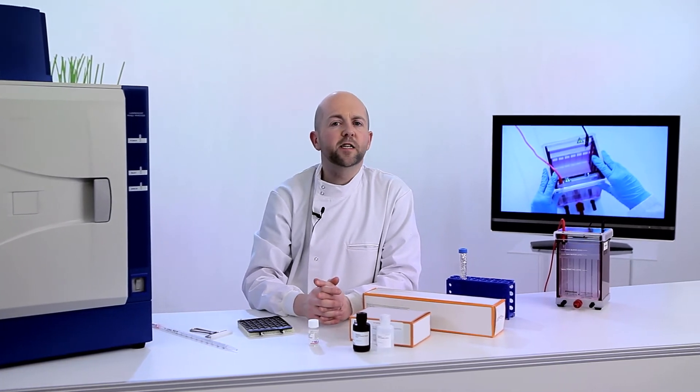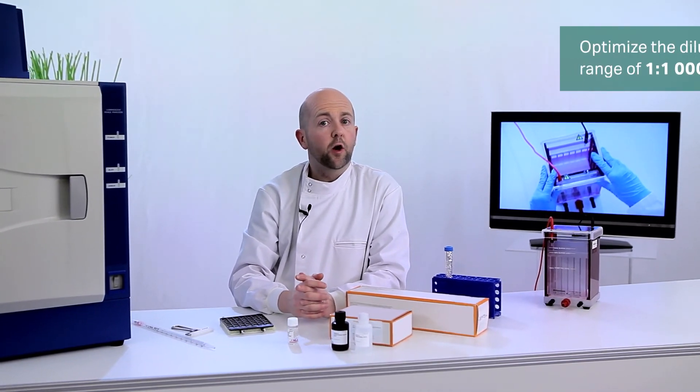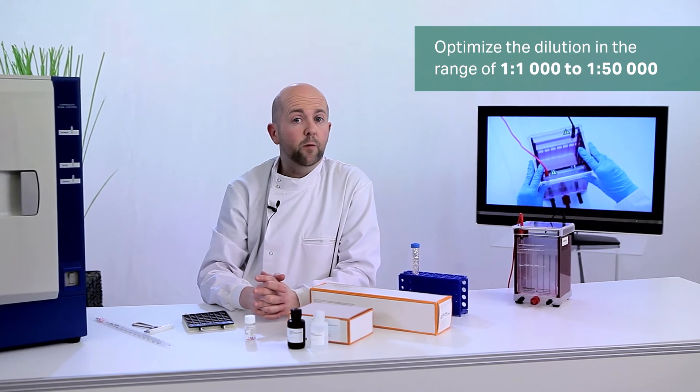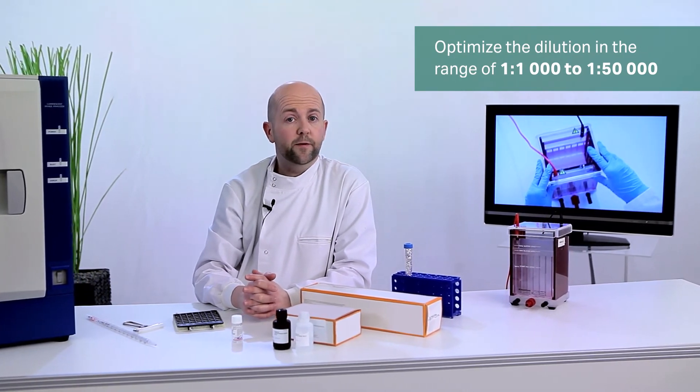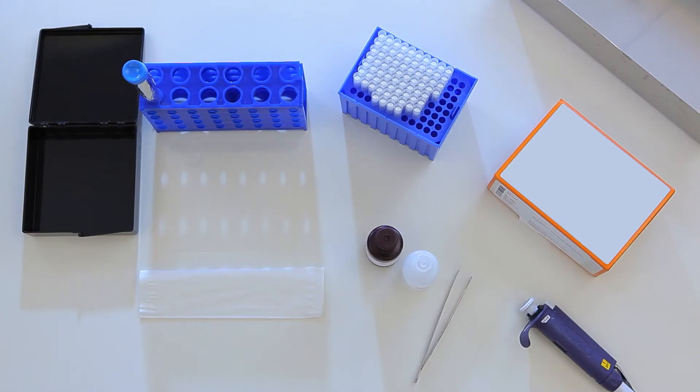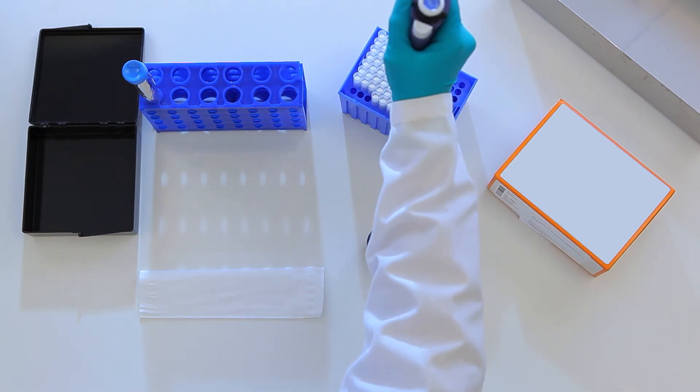Always select specific antibodies of high quality and optimize the dilution in the range of 1 to 1,000 to 1 to 50,000. ECL prime keeps precious primary antibody use to a minimum.